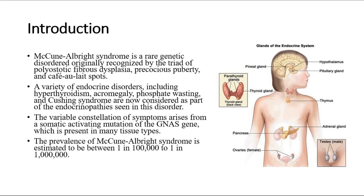McCune-Albright syndrome is a rare genetic disorder originally recognized by the triad of polyostotic fibrous dysplasia, precocious puberty, and café au lait spots. A variety of endocrine disorders, including hyperthyroidism, acromegaly, phosphate wasting, and Cushing syndrome, are now considered as part of the endocrinopathies seen in this disorder.